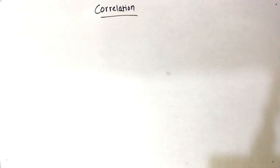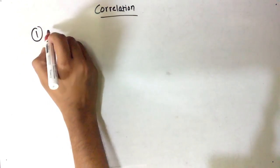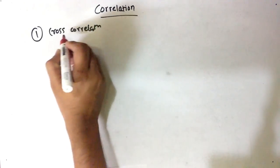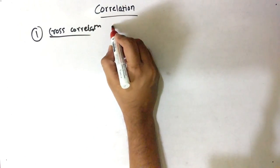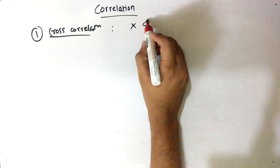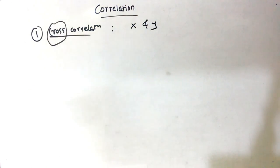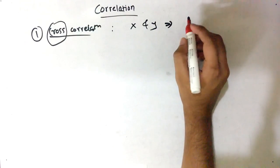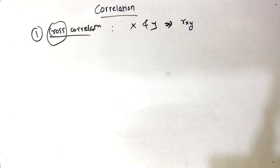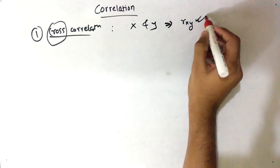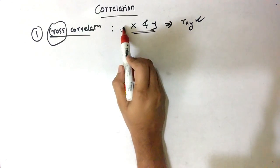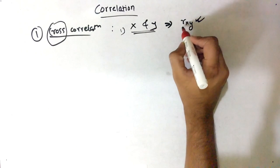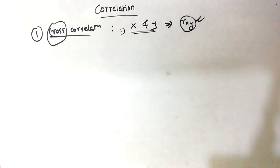So our first topic is cross correlation. Cross correlation means there are two different variables X and Y, therefore the word 'cross' comes in. It is represented as R_XY. So if you see X and Y, then it means it is cross correlation, and it is represented as R_XY.